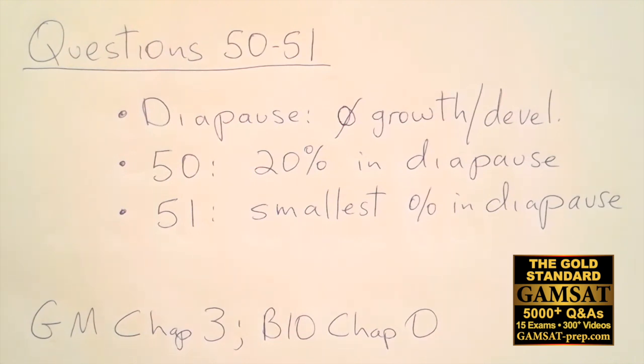They ask for 80% of the fly population that grows and develops. Well, if they grow and develop, that means they're not in diapause. And therefore question 50 is asking, where do you find on the graph 20% that are in diapause? Because the graph is showing us the percent in diapause. So by far and away, because A, B, and D are trying to give values of high percentage of diapause, for the lowest percentage of diapause at 20% is going to be by far and away choice C.